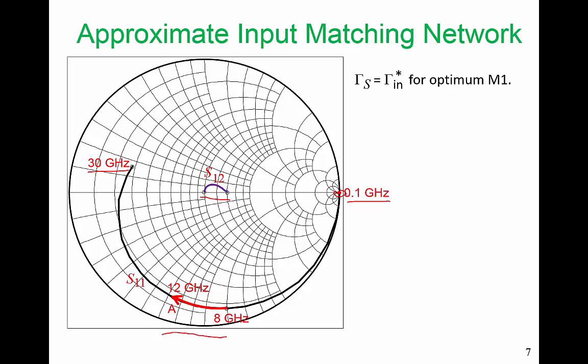Gamma s is equal to Gamma in conjugate for optimum M1, and Gamma in, which is the input reflection coefficient of our terminated transistor, is very close to S11. Let's plot the conjugate of S11 from 8 GHz to 12 GHz. So this is the complex conjugate. Curve B is the complex conjugate of curve A. We're going from 8 to 12 GHz. And note this arrow. We are going in a counterclockwise direction.